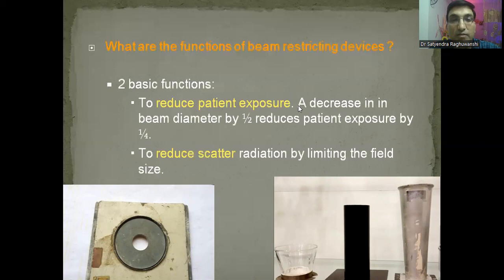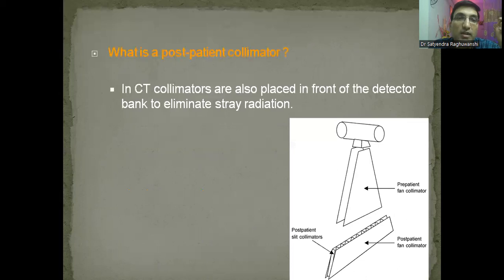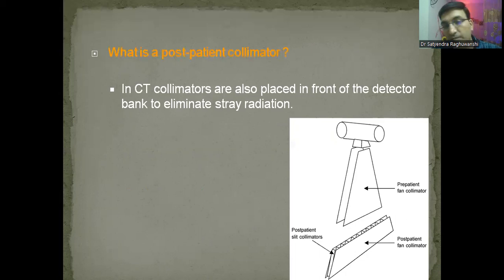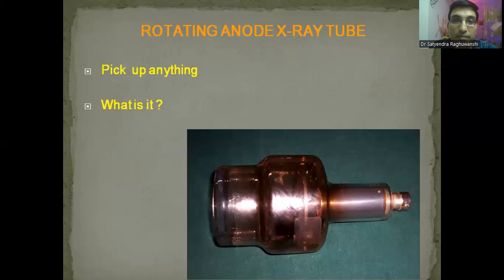What is the construction? The base is made of lead and the body is lined with copper, which aids in absorption. Collimators are sheets of lead — you will generally not find collimators in the table viva. In CT scans we also use pre-patient and post-patient collimators. Do the exposure factors change with beam restrictors? Yes — as with grids, a little bit of exposure factors have to increase to maintain film density.